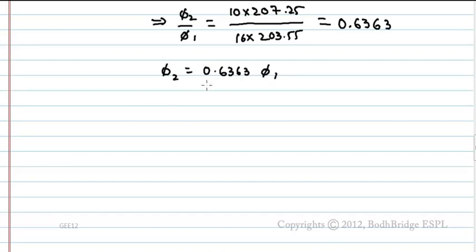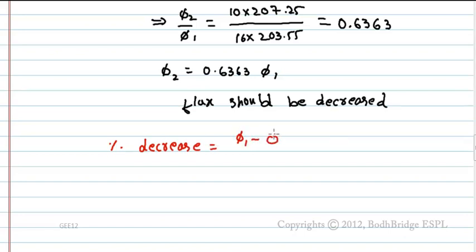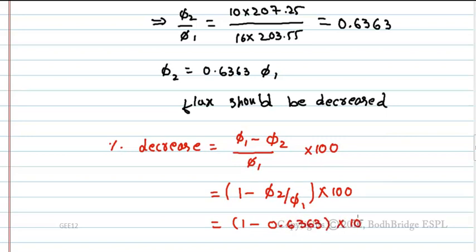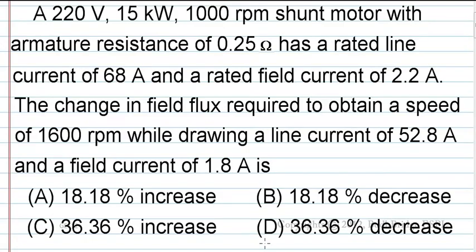From this, it is evident that flux should be decreased. Percentage decrease equals Phi1 minus Phi2 by Phi1 into 100. This equals 1 minus Phi2 by Phi1 into 100, which is 1 minus 0.6363 into 100. This equals 36.36%. So the change in field flux required is Option D, 36.36% decrease.